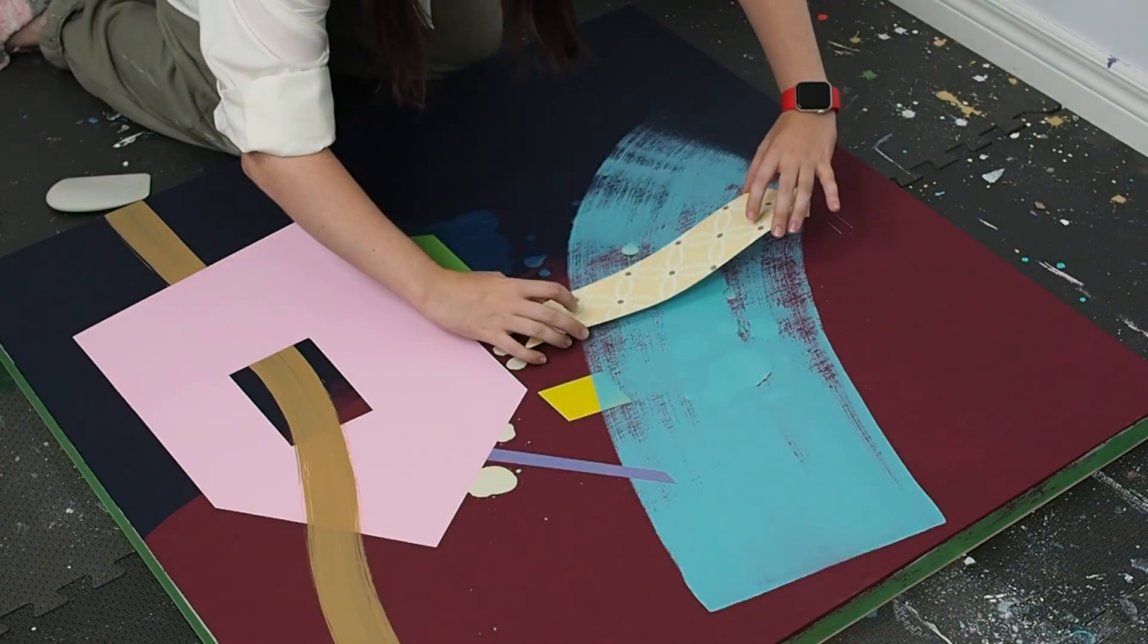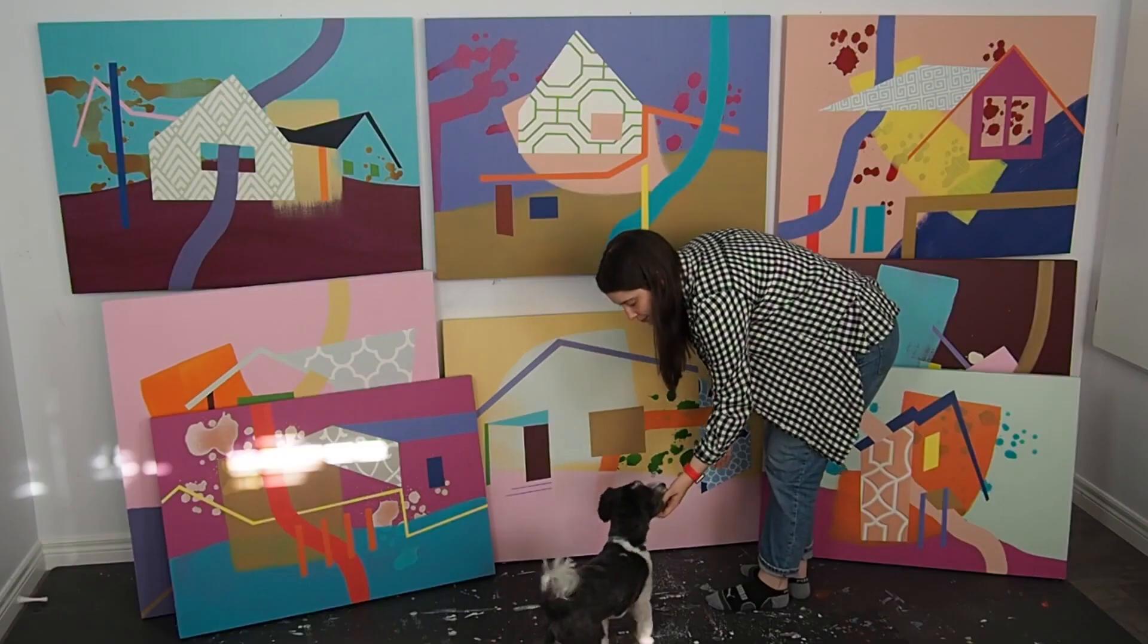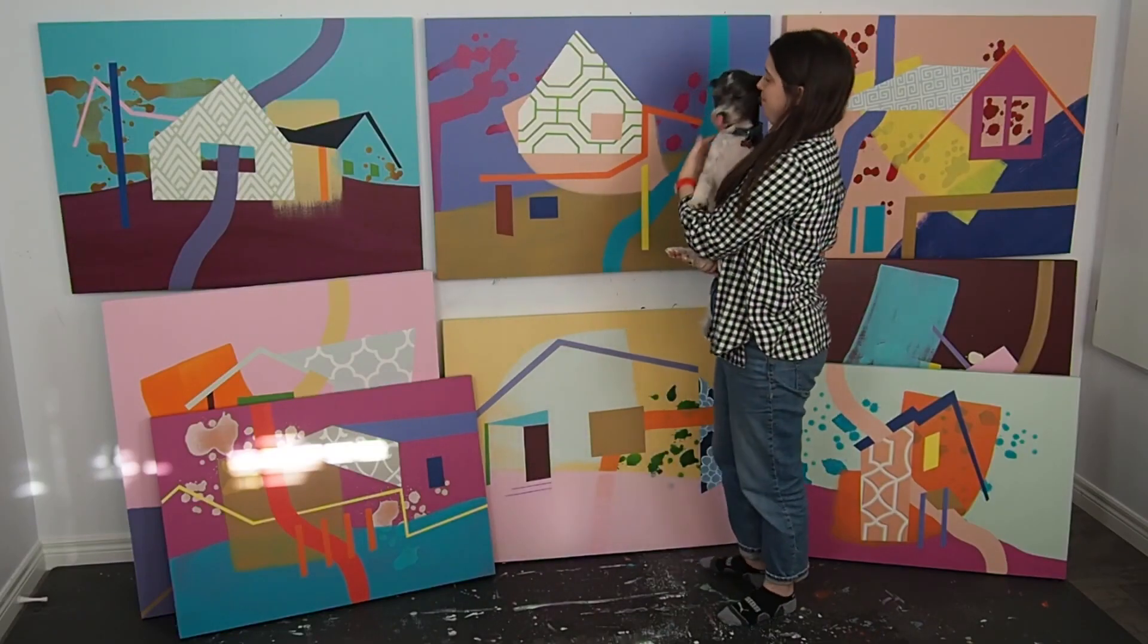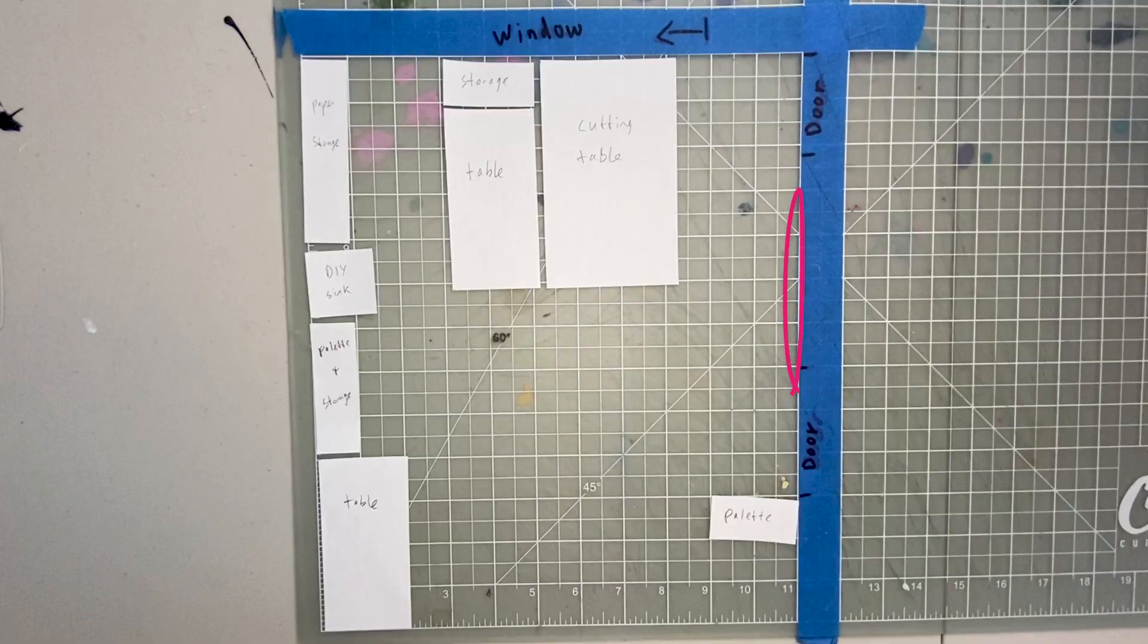I've covered the floor in foam tiles so the real floor underneath is protected, and it's comfier to stand on. I've got paper storage on the wall here, and I've also got storage underneath these tables.